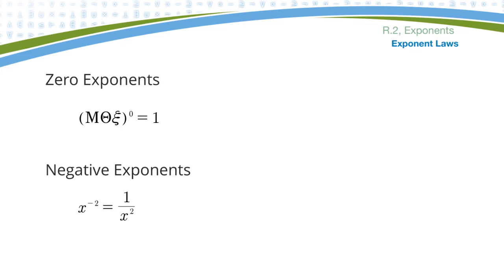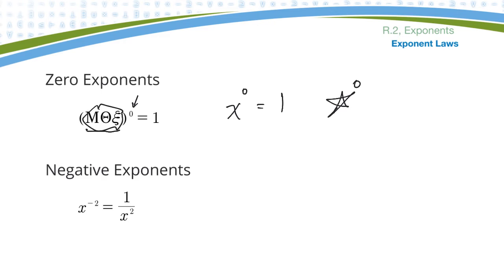Another couple of rules. One is zero exponents: if I ever have anything raised to the zero power, it's equal to one. It doesn't matter what it is — if it's raised to the zero, it's equal to one. If I have x to the zero, anything to the zero power is equal to one. Star to the zero equals one.